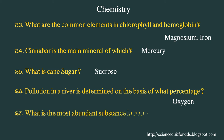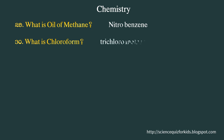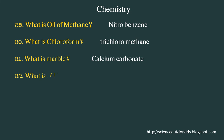What is the most abundant substance in human kidney stones? Calcium oxalate. What is the oil of mirbane? Nitrobenzene. What is chloroform? Trichloromethane. What is marble? Calcium carbonate. What is MIC? Methyl isocyanate.